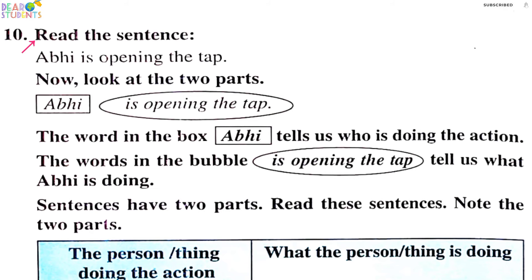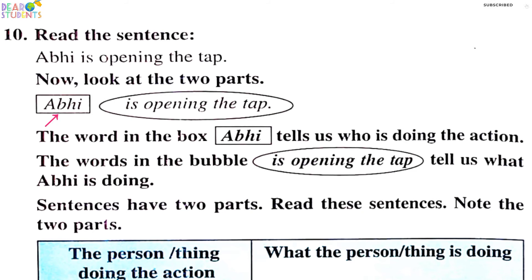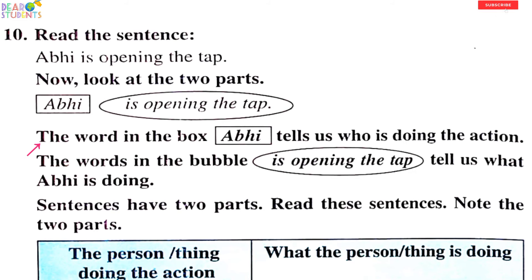Read the sentence: Abhi is opening the tape. Now look at the two words. The word in the box is 'opening the tape.' Tell us what Abhi is doing.